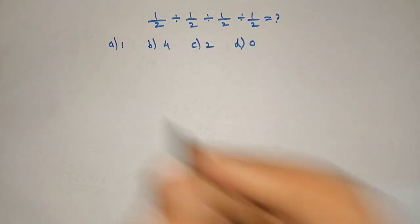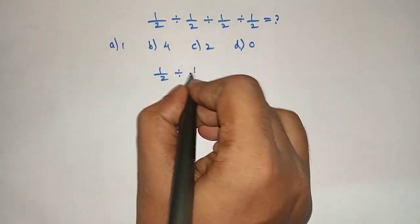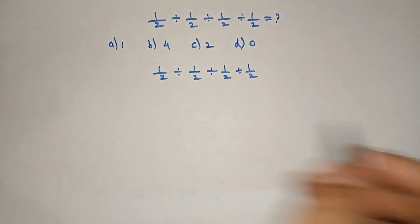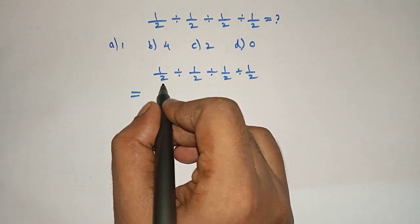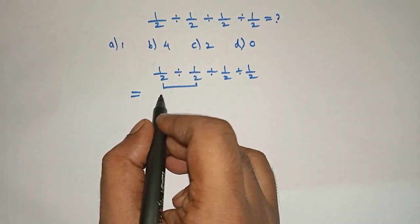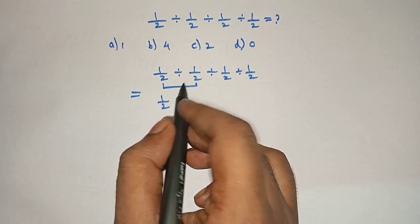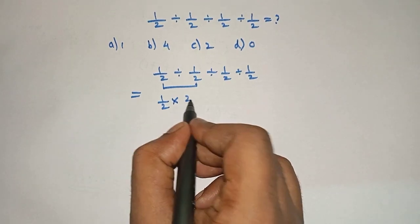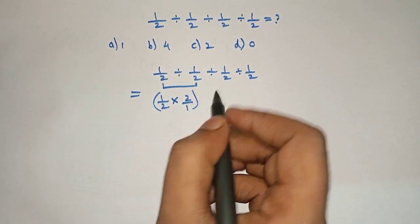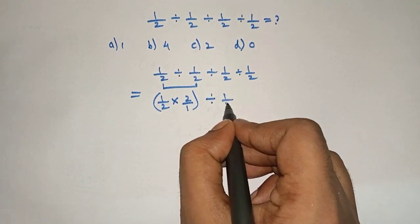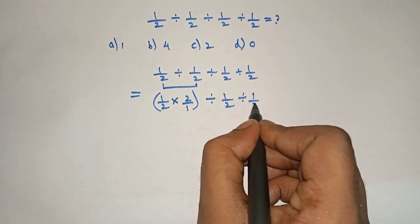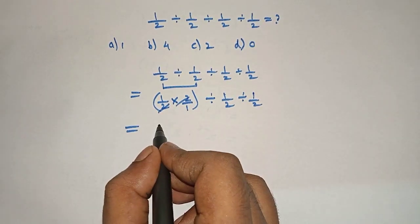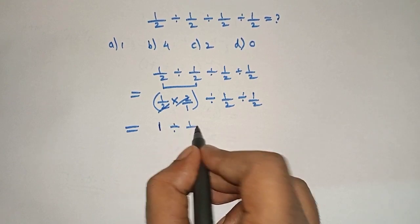Let's solve 1/2 divided by 1/2 divided by 1/2 divided by 1/2. First, we solve the first term: 1/2 divided by 1/2 can be written as 1/2 into 2/1, which equals 1. So we now have 1 divided by 1/2 divided by 1/2.